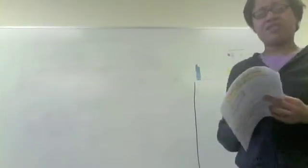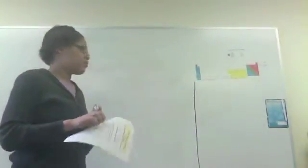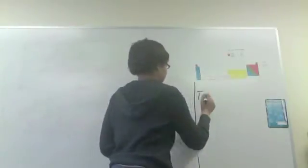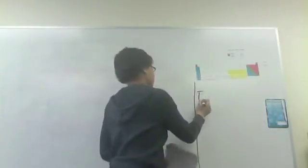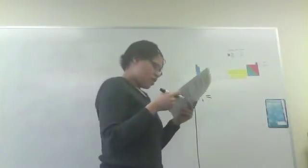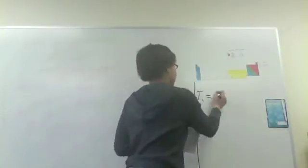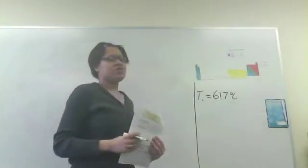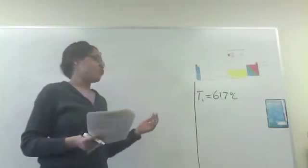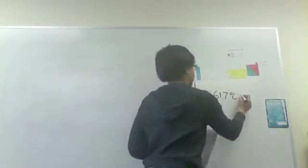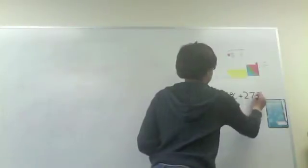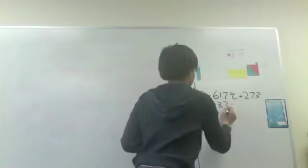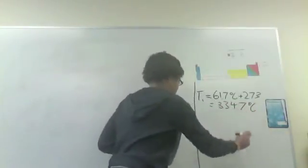As usual, we would like to start by putting down the information that we know. So we do know the boiling point temperature, and we will call that T1. That is 61.7 degrees Celsius. Now, when you use the Clausius-Clapeyron equation, you do want your temperature units to be in Kelvin, so we'll convert that to Kelvin by adding 273. That gives us 334.7 Kelvin.